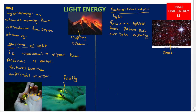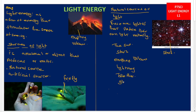There are several examples of natural sources of light: the sun, the stars, erupting volcanoes, lightning, and living organisms such as the fireflies and the glow worms. These are the examples of natural sources of light.